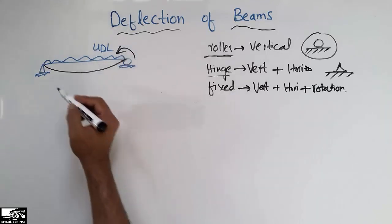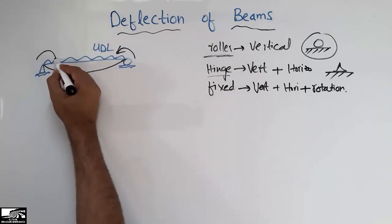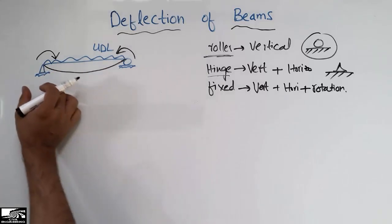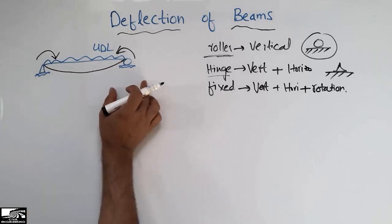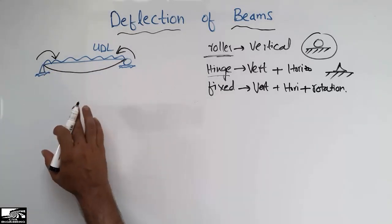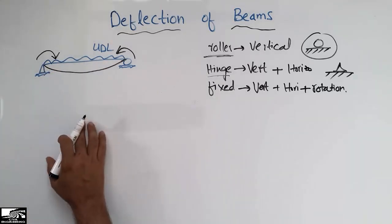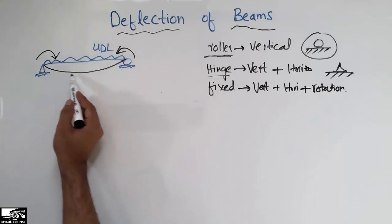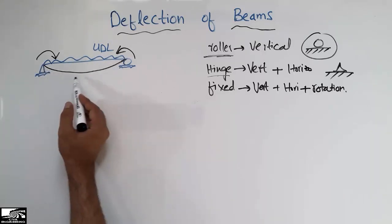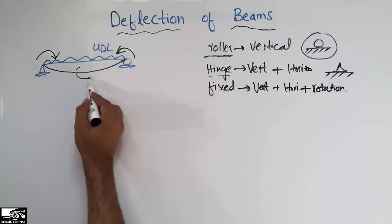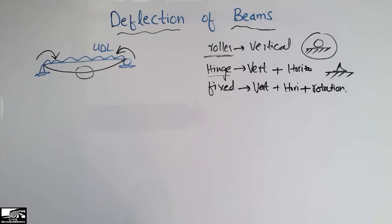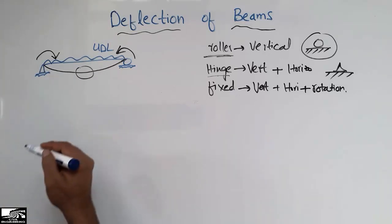This support will rotate in one way and the other support will rotate in the other way, so we have rotation at both ends. There is no vertical or horizontal movement because of the supports. This beam will deflect in this way, and the maximum deflection can be seen at the midpoint.